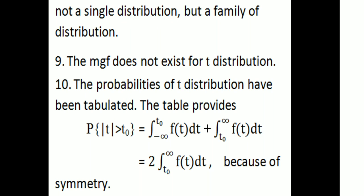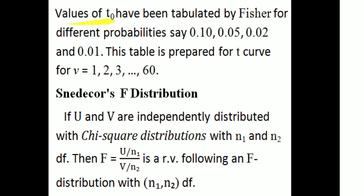The moment generating function does not exist for the t-distribution. The probabilities of the t-distribution have been tabulated. The table provides the probability P(|t| > t₀) = 2∫[t₀ to ∞] f(t)dt, due to symmetry. Values of t₀ have been tabulated by Fisher for different probabilities such as 0.20, 0.10, 0.05, 0.02, and 0.01, for degrees of freedom v = 1, 2, 3, etc.